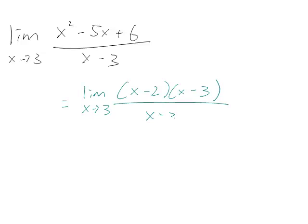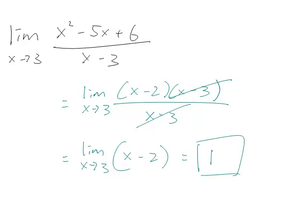The x minus 3s will cancel out, meaning that this is really the limit of x minus 2. Put in x equals 3, and you get the answer of 1.